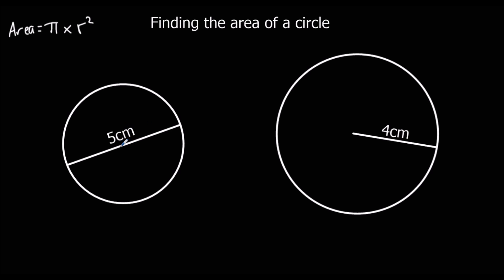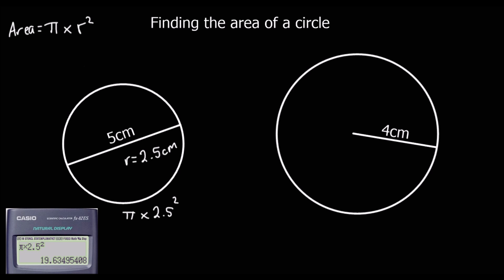In this example, we've got the diameter again, so we need to find the radius, which is half the diameter, so it must be 2.5 centimeters. We're going to do pi times 2.5 squared. Pi times 2.5 squared comes out as, to one decimal place, 19.6 centimeters squared.